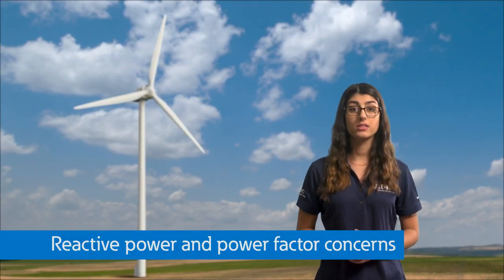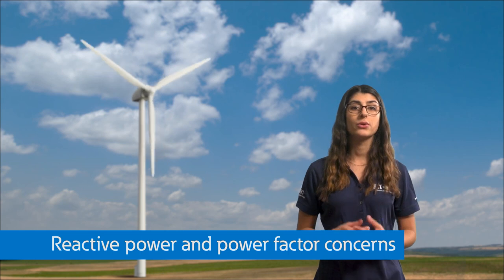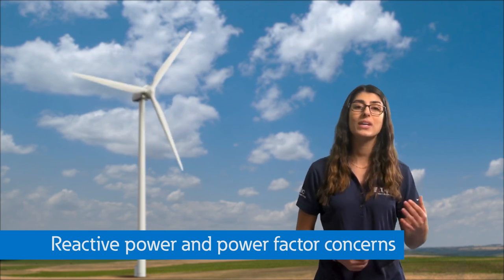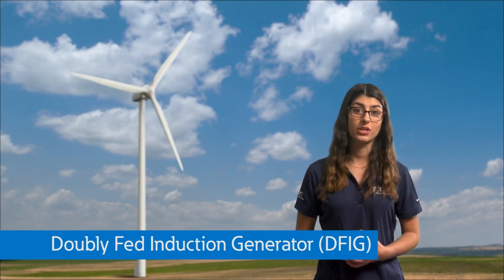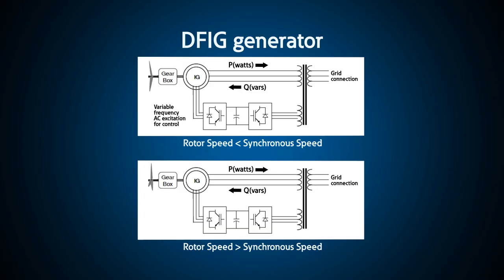When we think about reactive power and power factor concerns, we have to consider that most wind turbines have doubly fed induction generators, or DFIGs. This means the generator obtains reactive power from the grid and grid-connected systems. However, during isolated system operation, reactive power is created from external sources like batteries and capacitors.